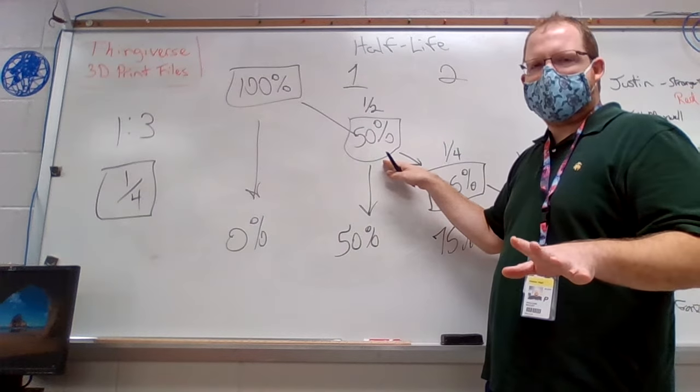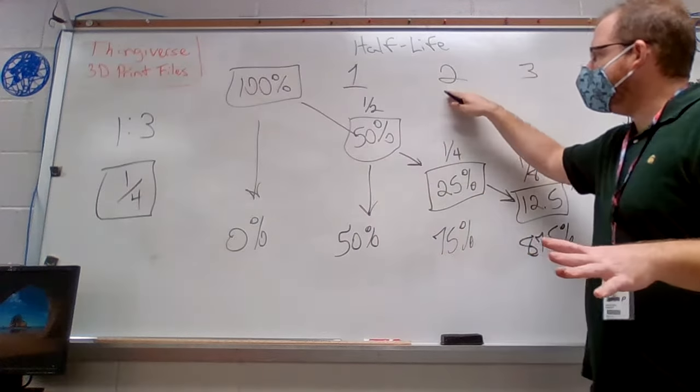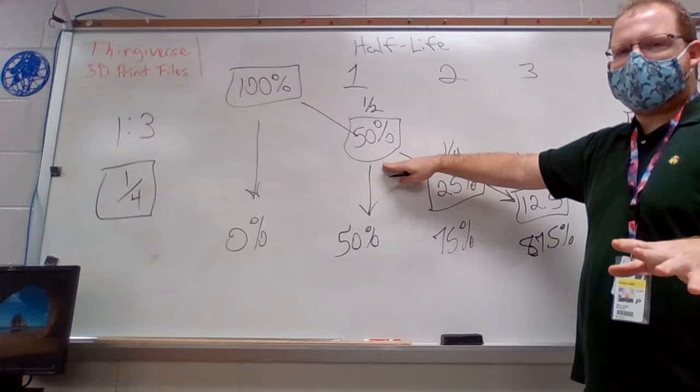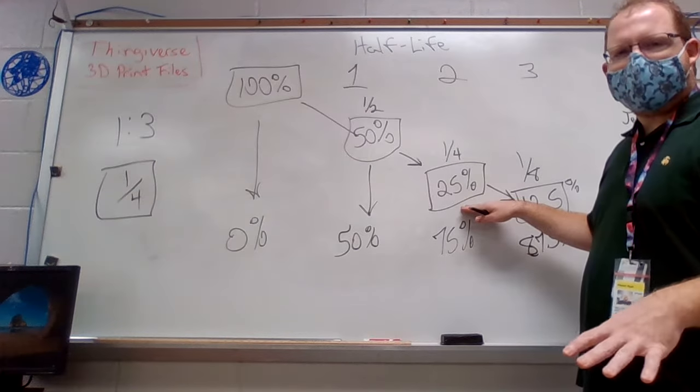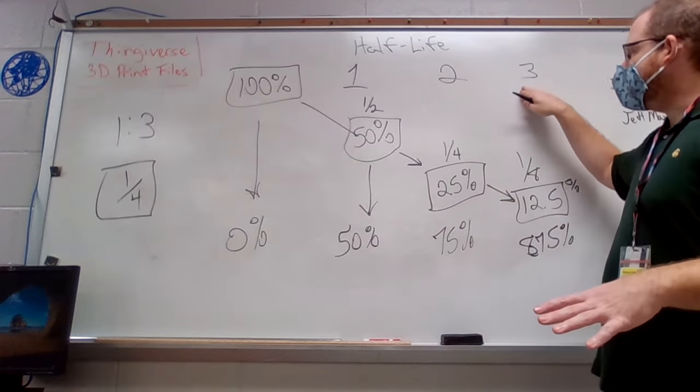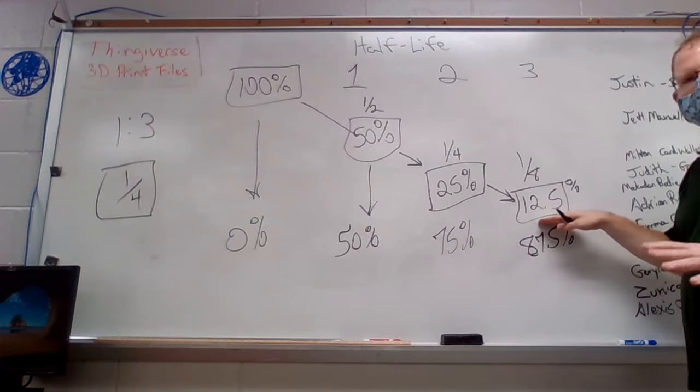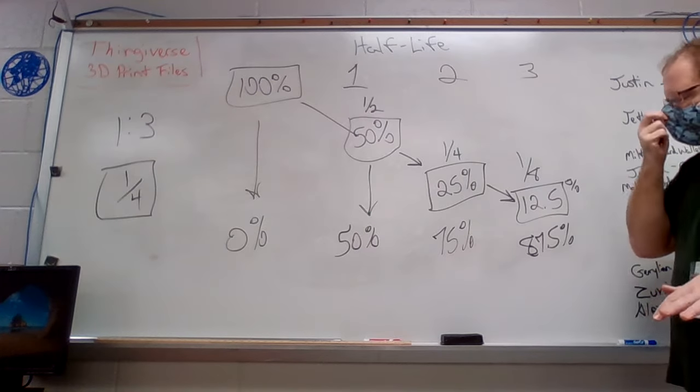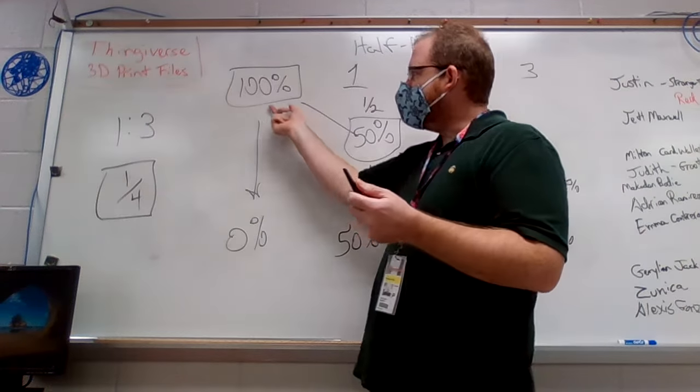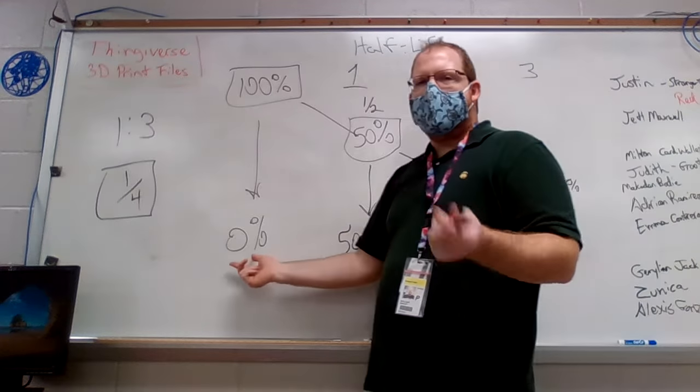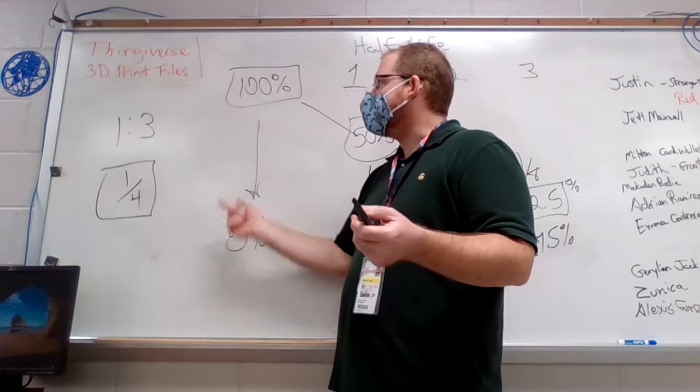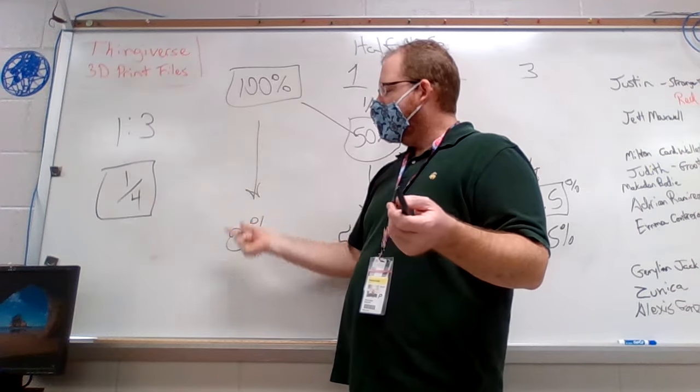So you cut it in half and you have 50%. After two half-lives, you cut that 50% in half again. So 50% gets cut down to 25%. After three half-lives, you get cut down to 12.5%. And the amount of, as your radioactive element is decreasing, the amount of your non-radioactive element is increasing. So if I have 100% uranium, I don't have any lead.